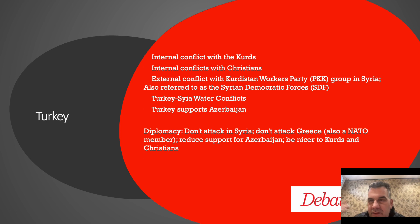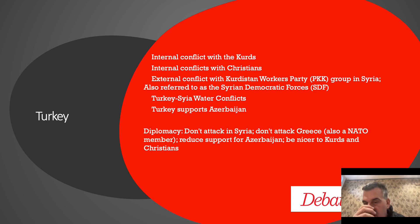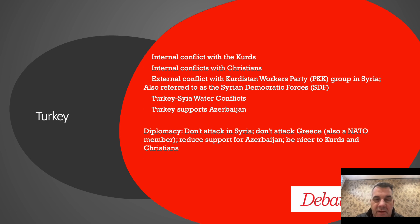Turkey has internal conflicts with the Kurds and Christians residing within Turkey. There are conflicts with Syria over water — a case about water conflicts between Turkey and Syria was read at tournament. Turkey also supports Azerbaijan in its conflict with Armenia. Turkey controls Northern Cyprus and retains a 35,000-person army in the north. Some recent evidence suggests diplomacy should be used to prevent that conflict from escalating — a potential sleeper case not yet seen in rounds.